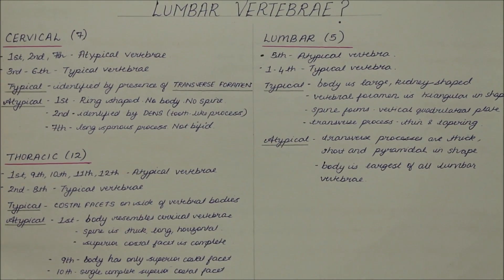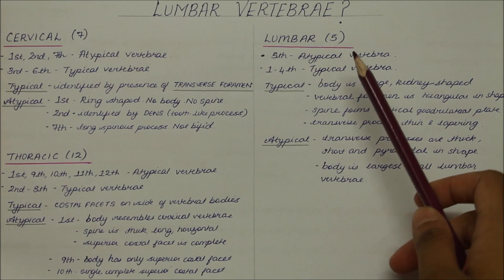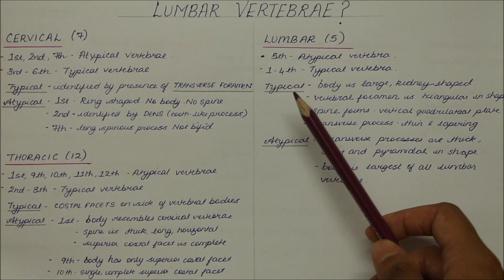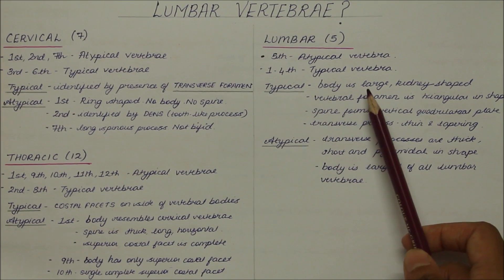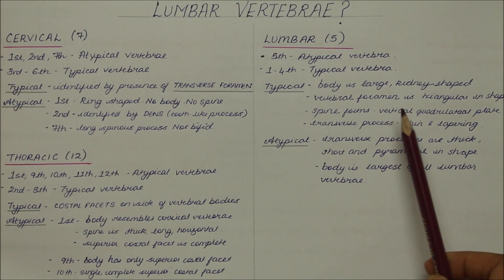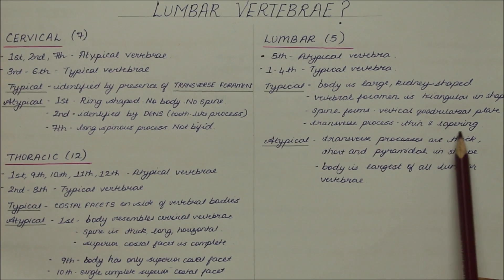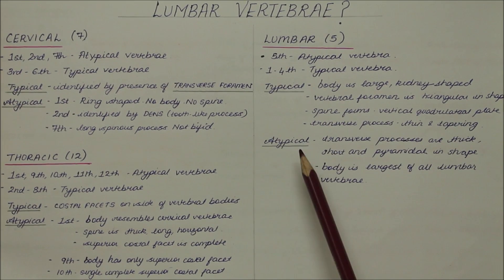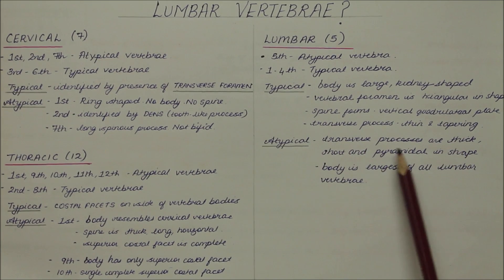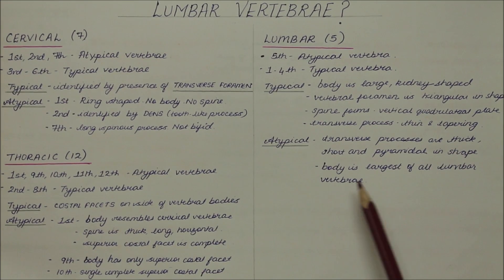In summary: there are 5 lumbar vertebrae, with the fifth being atypical. The typical lumbar vertebra has a large, kidney-shaped body, a triangular vertebral foramen, a spinous process forming a vertical quadrilateral plate, and thin tapering transverse processes. The atypical fifth lumbar vertebra has thick, short, pyramidal transverse processes and the largest body of all lumbar vertebrae.